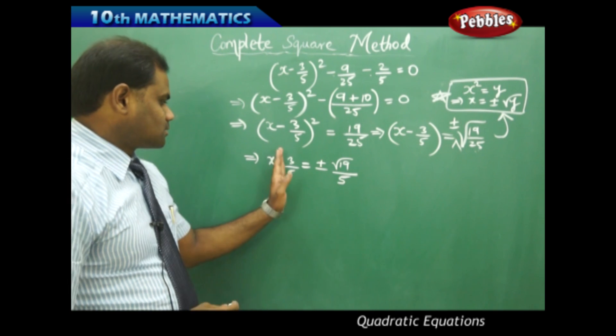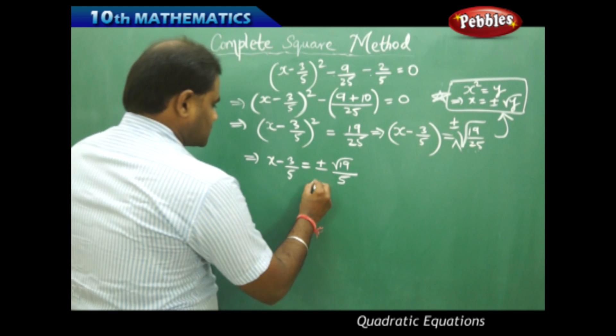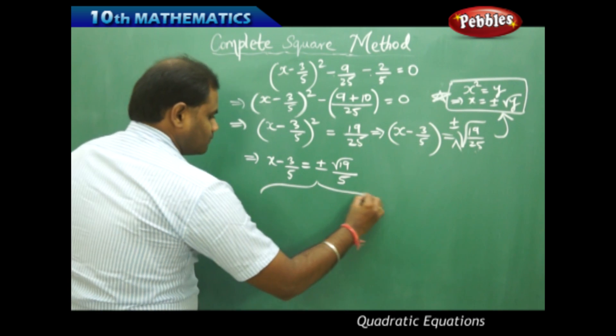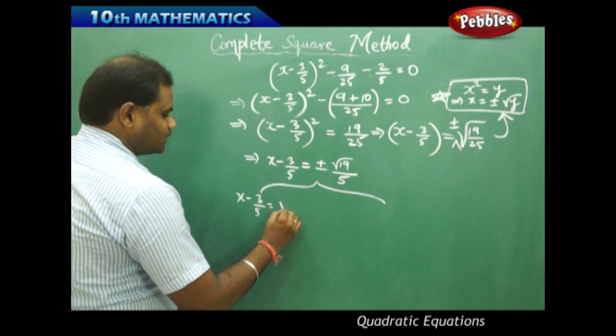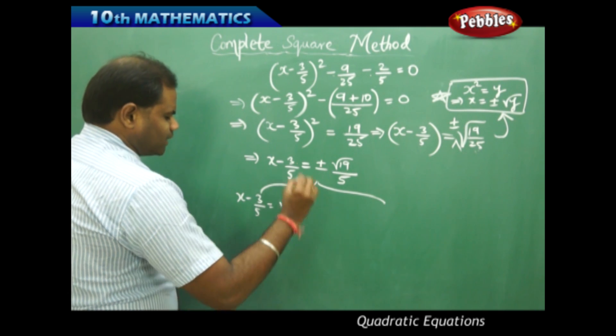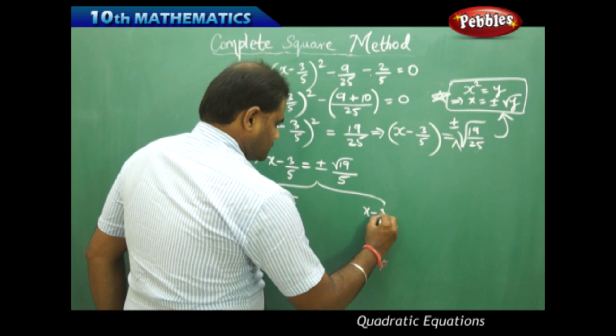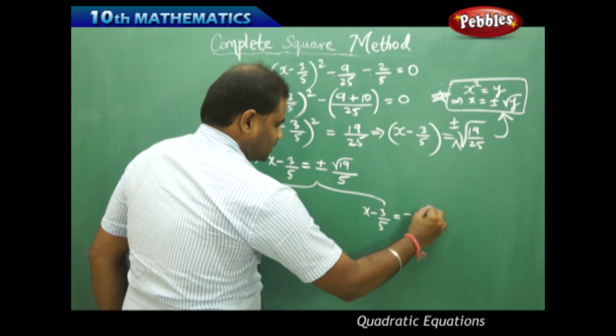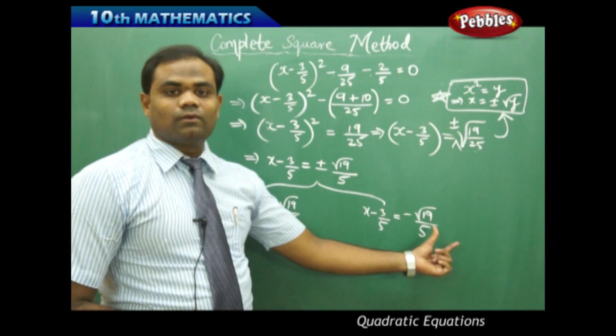This constant on the left is taken to the right with two values where I get one with plus and one with minus: x - 3/5 = √19/5 and x - 3/5 = -√19/5.